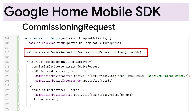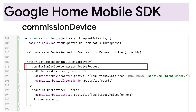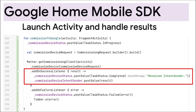So how does the Commissioning Client API work? Let's head back over to Android Studio and find out. In our Commission to Google function, first, a commissioning request object is defined. Matter is the entry point for the Google Home Mobile SDK. In the next call, the Get Commissioning Client function gets a commissioning client by the fragment activity. The Commission Device method accepts the commissioning request. The success callback of the Commission Device method provides an intent sender to launch the commission device activity in Google Play Services. Here, we use live data objects to report the results of our API call. That was the minimum code required to commission a device to Google's fabric.